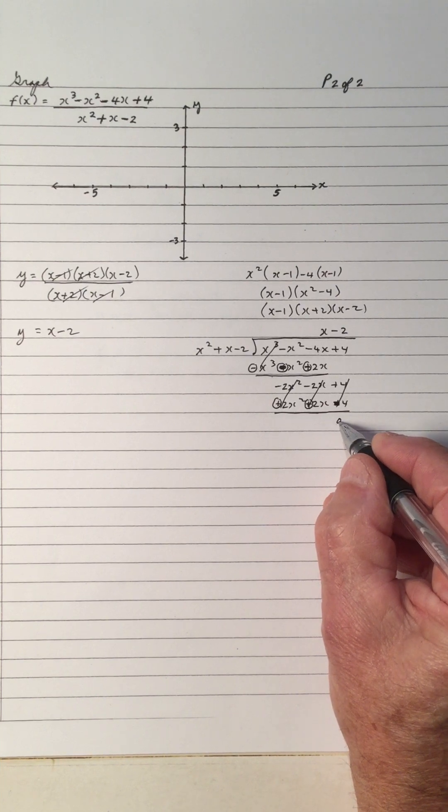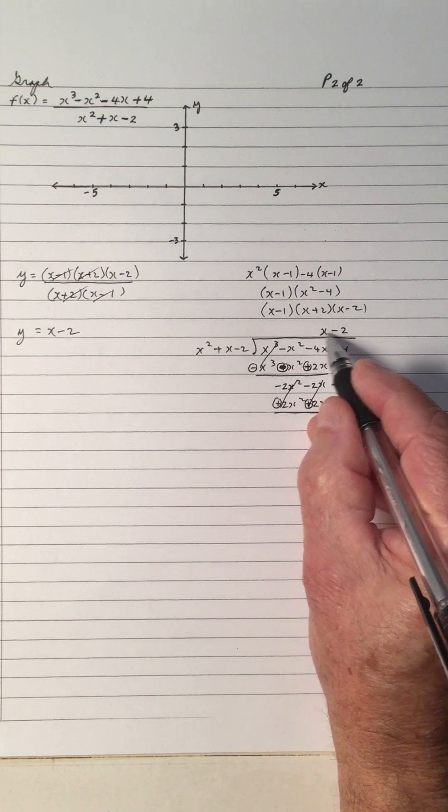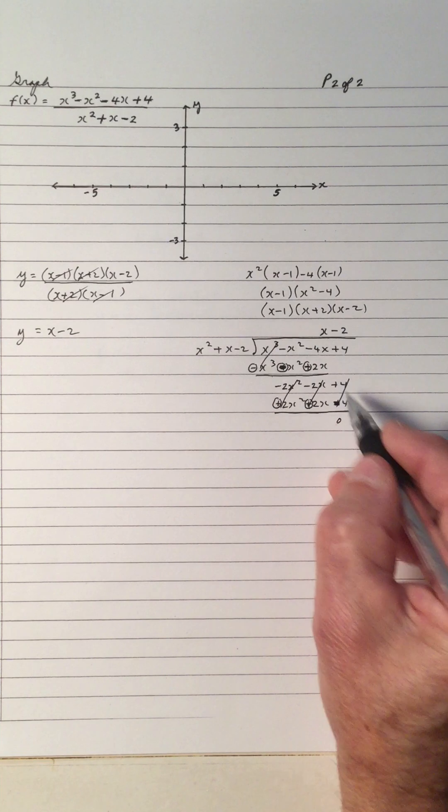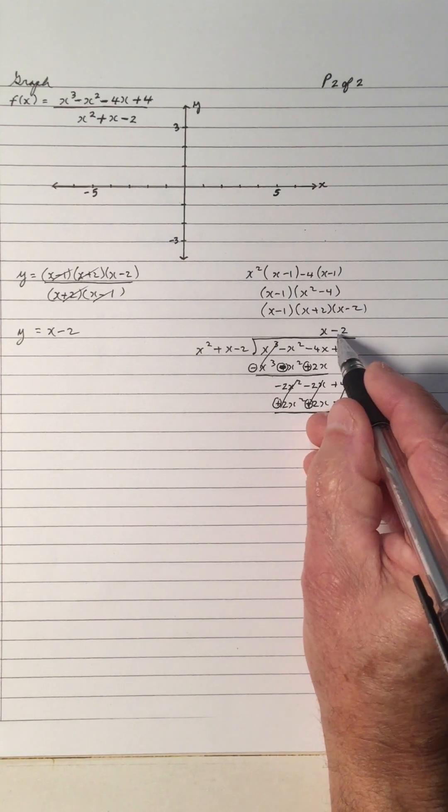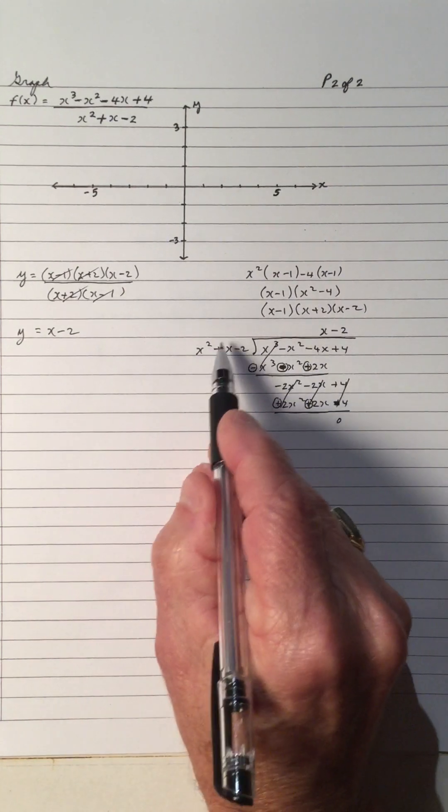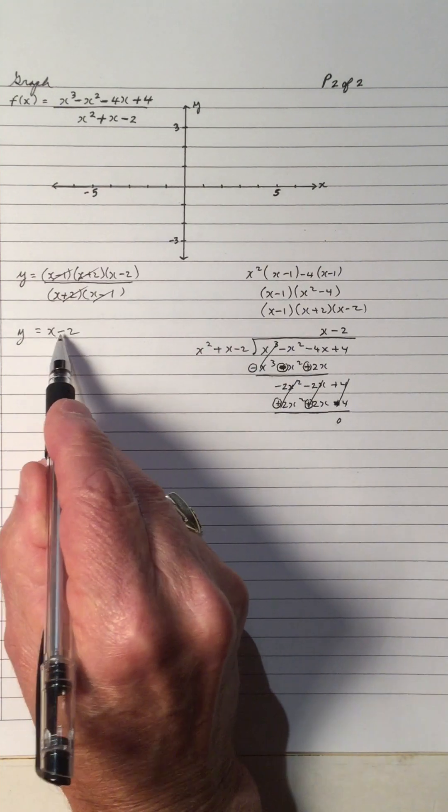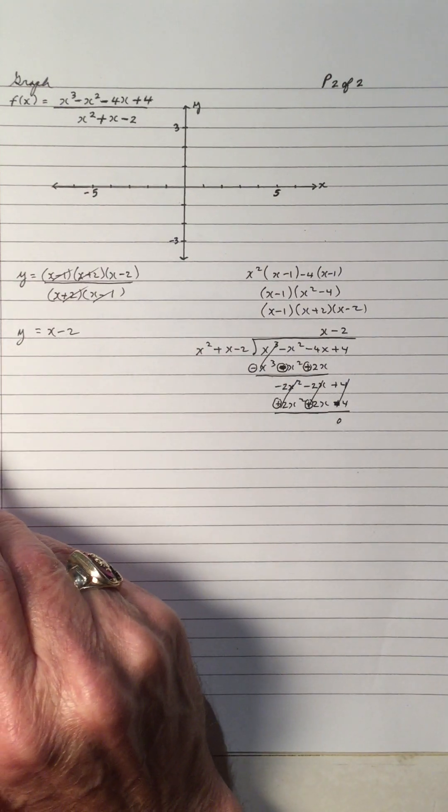Notice because this is a zero remainder, that means this is a factor of this. Zero is the remainder, so x minus 2 is a factor. So if I did the long division, it would come out to be this right here. Either way.